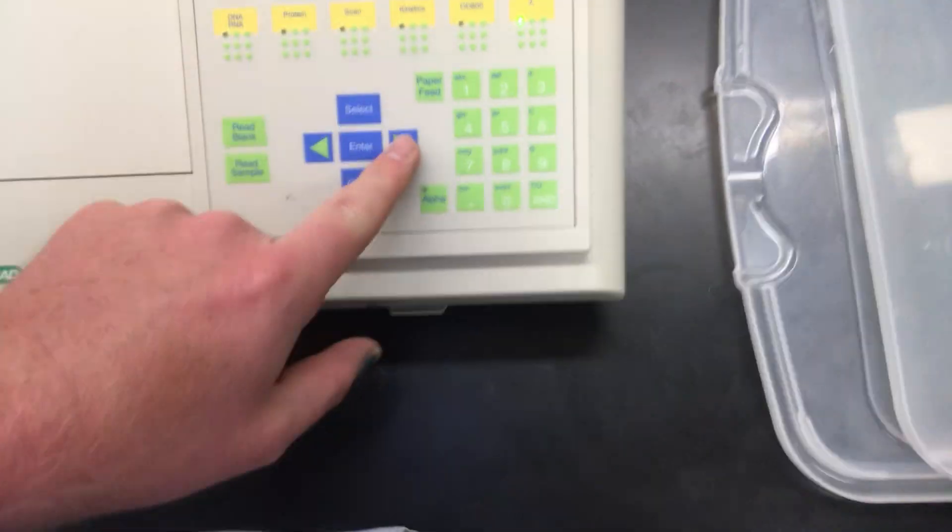I'll press continue by pressing the right button. Now, my spectrophotometer has been blanked. What I can do at this point is make a new mixture with 900 microliters of my Bradford reagent, 100 microliters of my protein fraction, or 90 microliters of my protein fraction and 10 microliters of water.